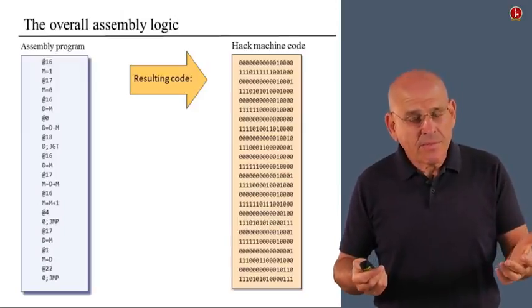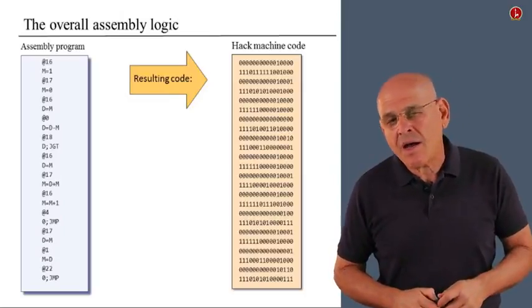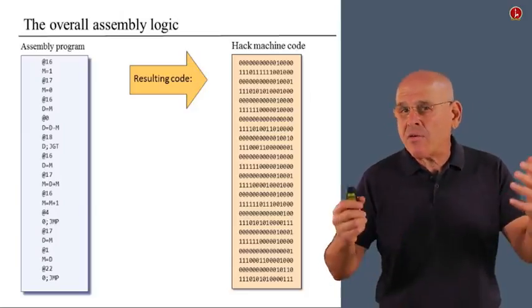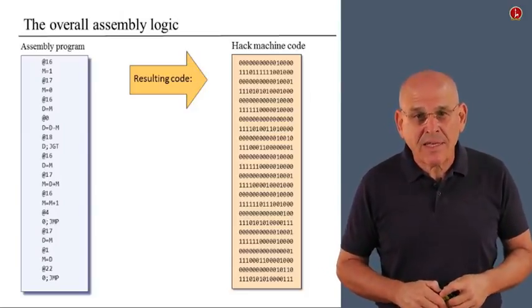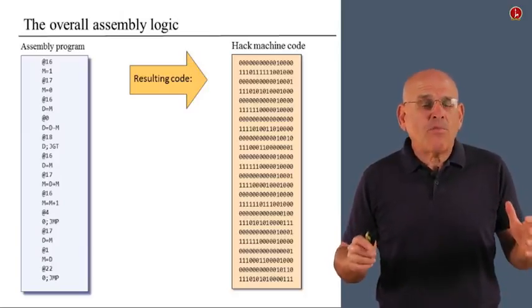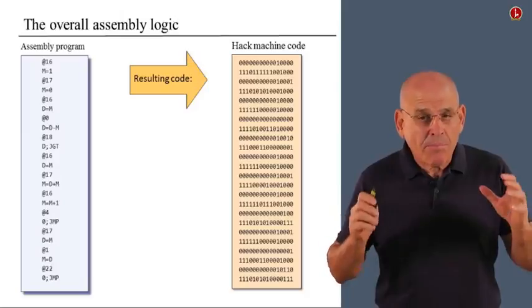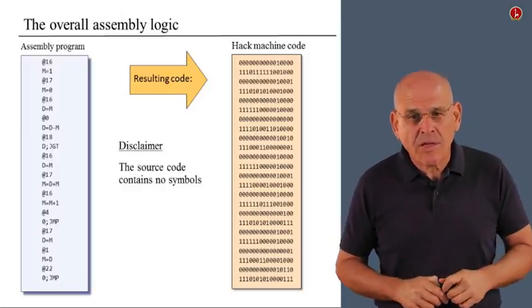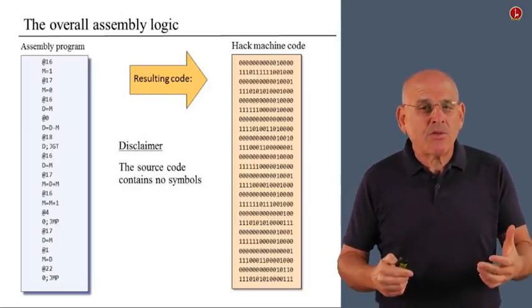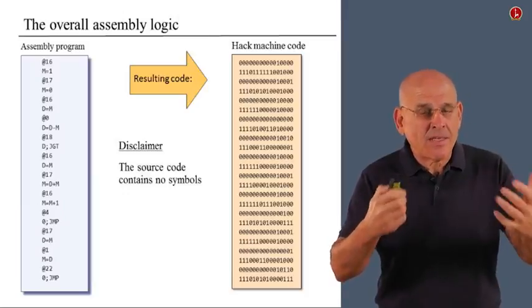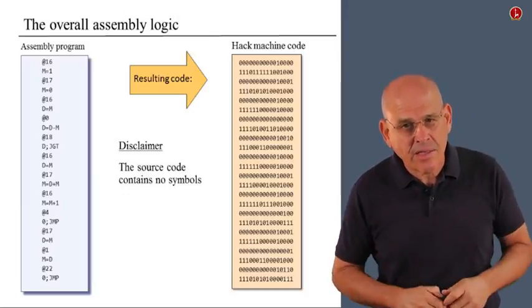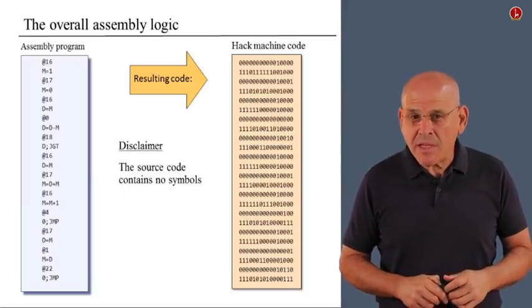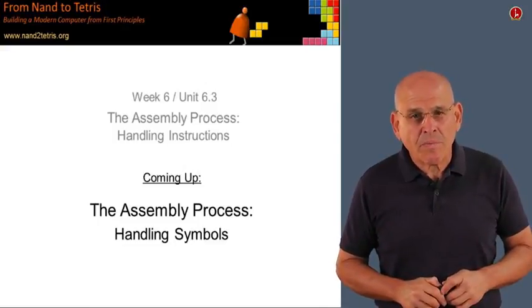If you do all this, then you will manage to create an assembler that can translate programs into binary code, and everything looks very nice indeed. And I'd hate to be a party spoiler, but there's a big gap that we haven't closed yet. And this is the fact that the source code contains no symbols. We have managed to design an assembler that translates symbol-less programs. But we still have to close this gap of dealing with symbols. And that's exactly what we're going to do in the next unit.